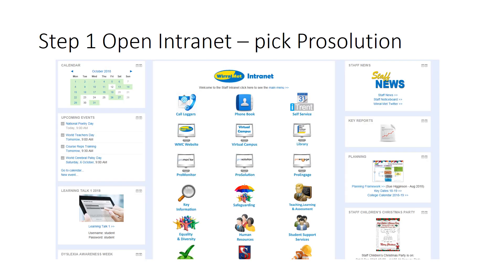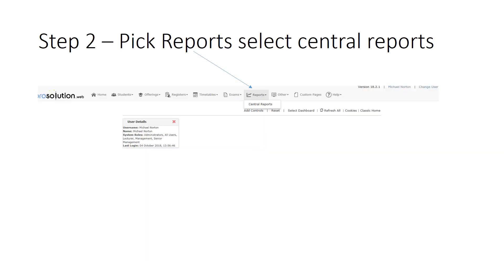I'm going to take you through how to open it. Step one: open up the internet and pick the ProSolution symbol — the third one down in the middle column. Click that and ProSolution will open. When it opens, go across to Reports and pick the one option available to you: Central Reports. Click that and it will bring up the available reports you can pick from.